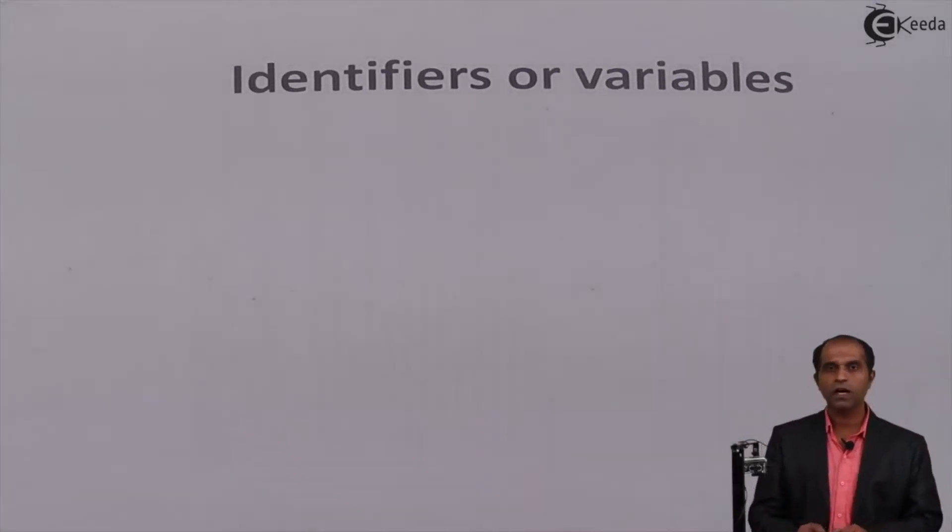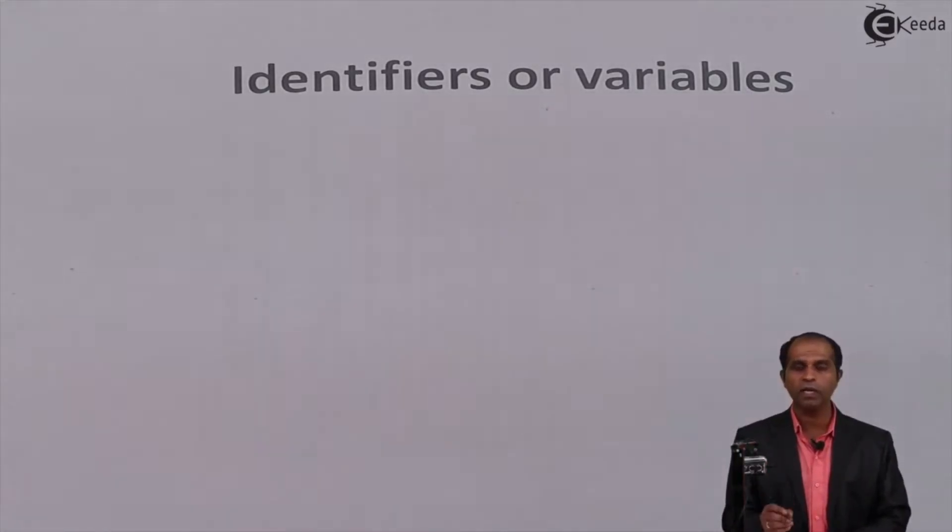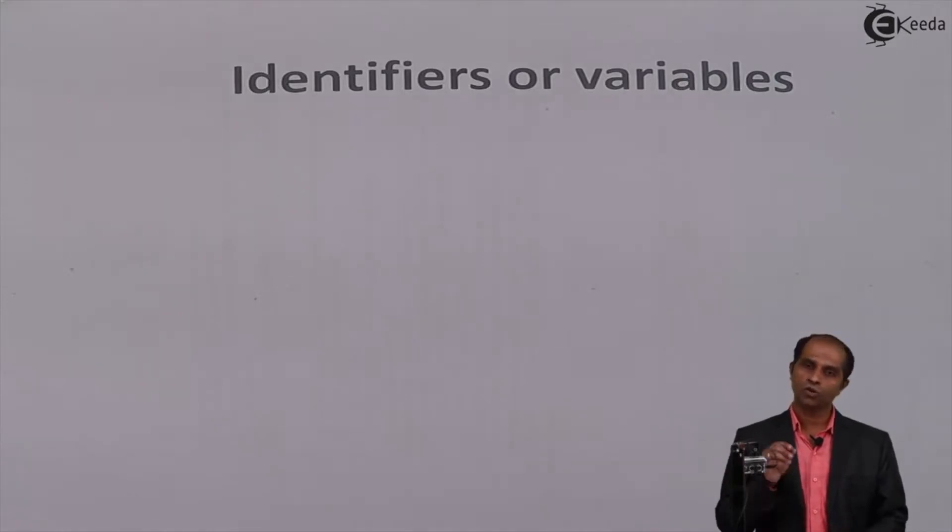Let's use identifiers and variables in our programs. When I use identifiers or variables, they are naming conventions used to store a quantity, to allocate a name for a program, or to allocate a name for a module. You can use these naming conventions, and we call them identifiers.